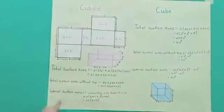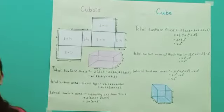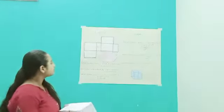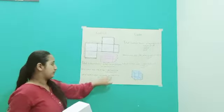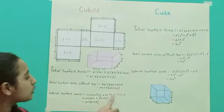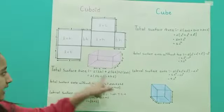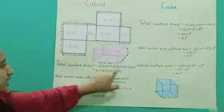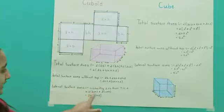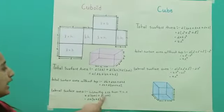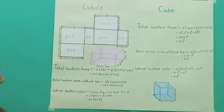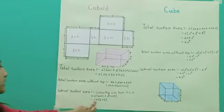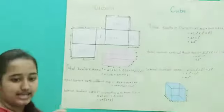Now, lateral surface area. Lateral surface area means removing the top and the bottom. So we will subtract 2LB from the total surface area. That gives us 2(breadth into height) plus 2(length into height). Simplifying, 2H is common, so it becomes 2H(breadth plus length).